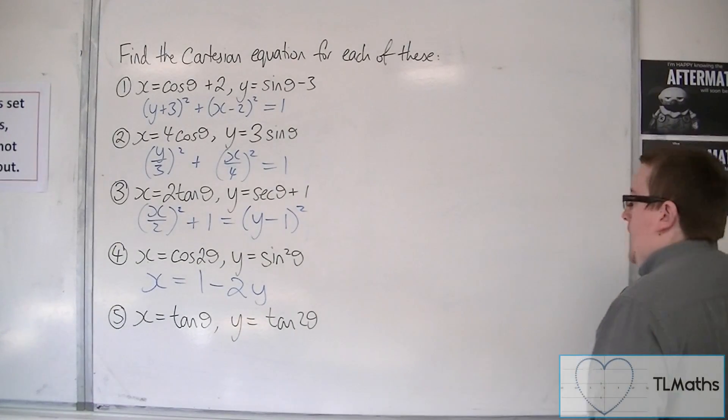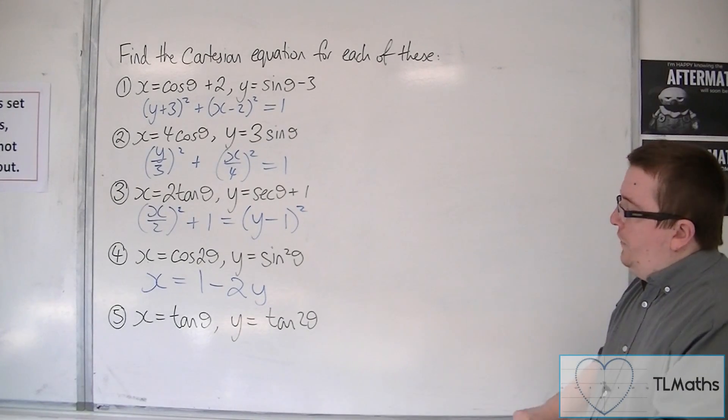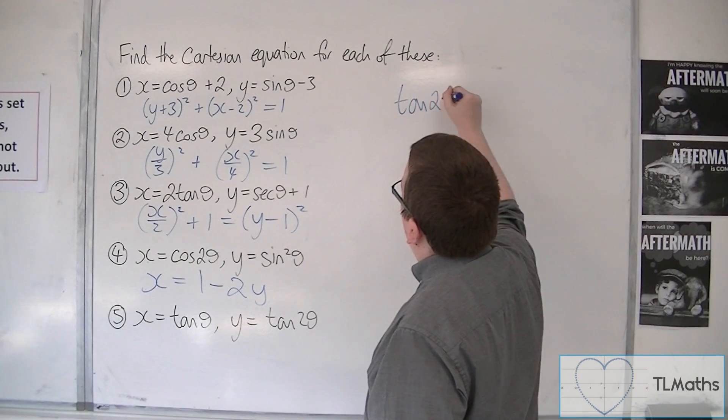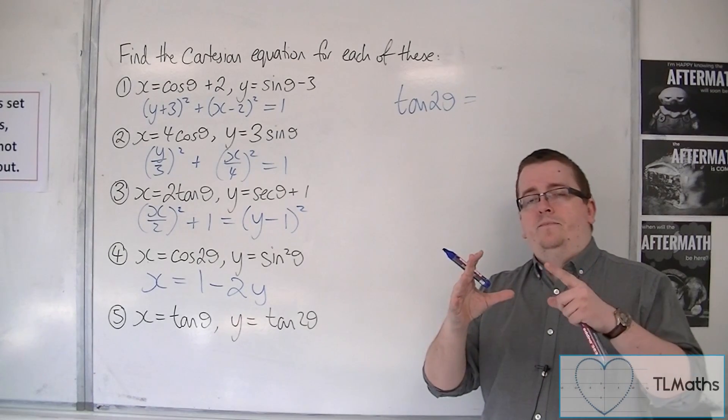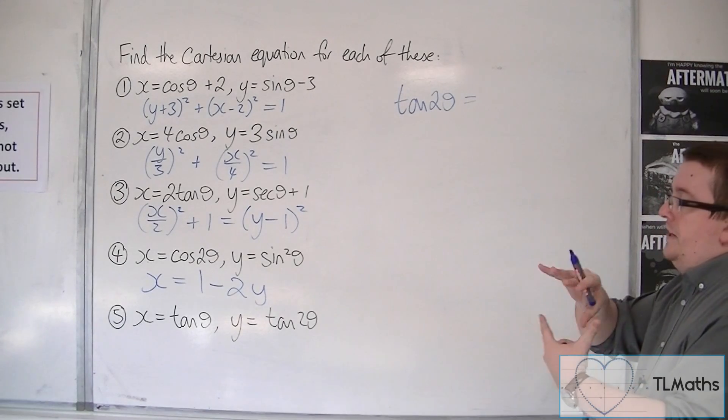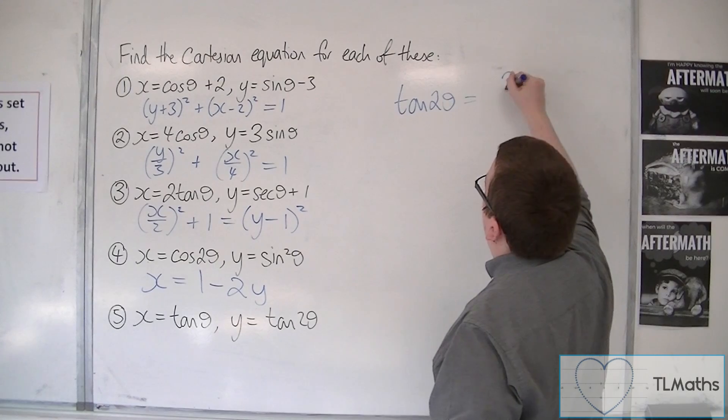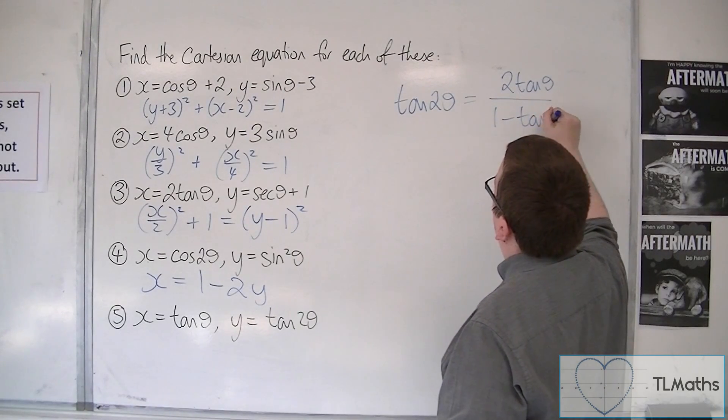Then the last one, x equals tan theta, y equals tan 2 theta. For this one, I'd look at tan 2 theta, and you either remember what that is, or you can look it up using the compound angle formula in the formula booklet and put theta plus theta. And you'll get 2 tan theta over 1 minus tan squared theta.